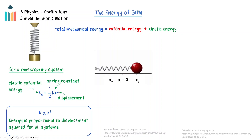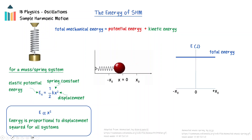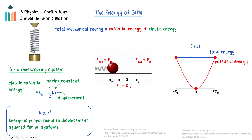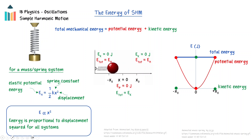If we consider the energy of a mass-spring system undergoing simple harmonic motion through the use of a graph of energy as a function of position, the total energy is constant, resulting in a horizontal line on the graph. At the maximum displacements, the total energy is in the form of potential energy, and at the equilibrium point, the potential energy is zero. Because the elastic potential energy is proportional to the displacement squared, this graph will be parabolic. The kinetic energy will be zero at the maximum displacements and equal to the total energy at the equilibrium point. Because the total energy at any point is the sum of the potential and kinetic energies, this kinetic energy graph will also be parabolic but inverted. This graph applies to all simple harmonic oscillators.